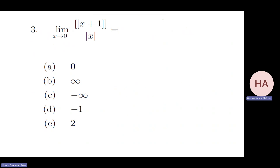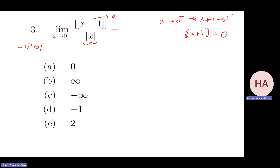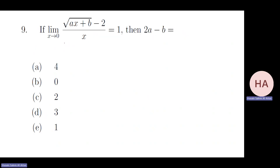If x goes to zero from the left, that means x plus one goes to one from the left, so the greatest integer will be equal to zero. If we take a value like negative 0.001, those terms reach zero while this one will not, so zero over non-zero gives zero. Since we have the greatest integer, any value will give zero, so that will be the answer.